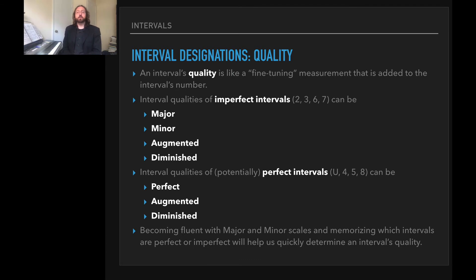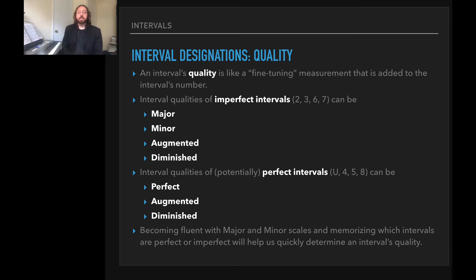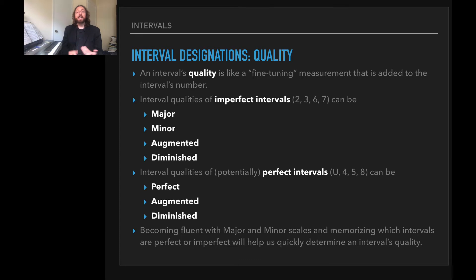Interval qualities of imperfect intervals — seconds, thirds, sixths, and sevenths — can be either major, minor, augmented, or diminished. It will be one of those four for now; you can also have doubly augmented and doubly diminished, but we're not going to be dealing with that right now. Interval qualities of potentially perfect intervals — the unison, fourth, fifth, and octave — can be either perfect, augmented, or diminished. In that case there are fewer options; we don't have major and minor, we just reduce it down to perfect. One of the ways it's going to be very helpful in identifying intervals is to become very fluent with major and minor scales and memorizing which intervals are perfect or imperfect.